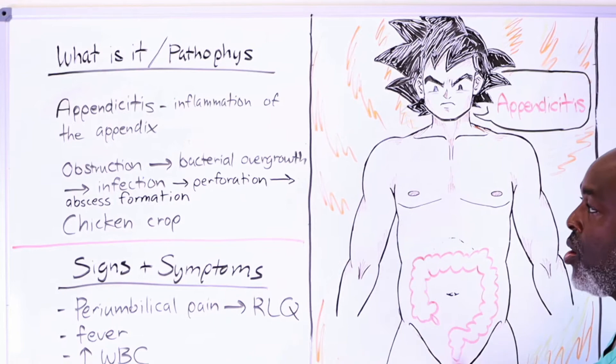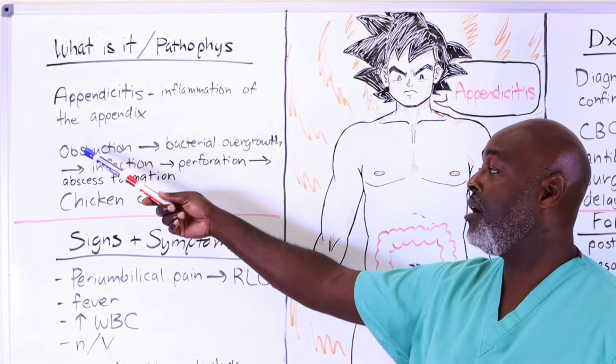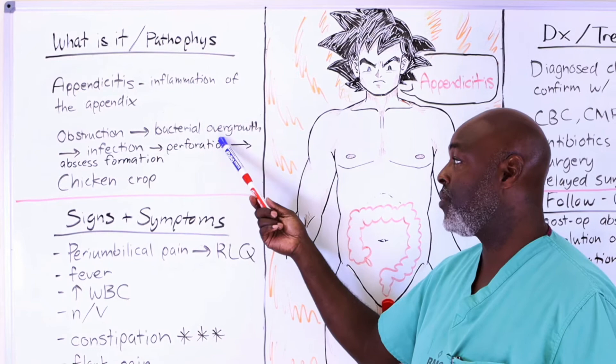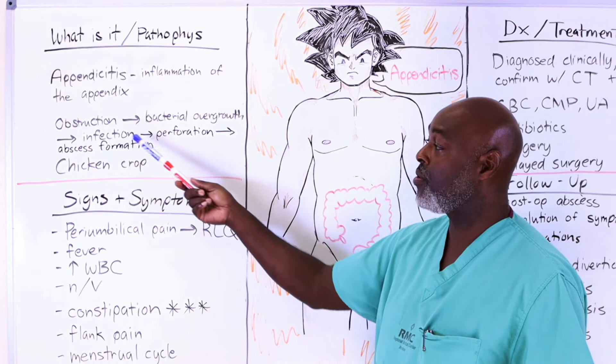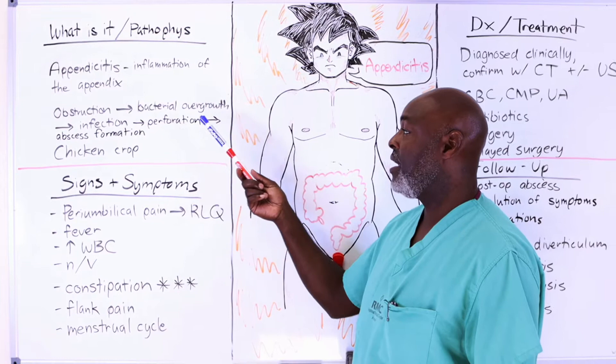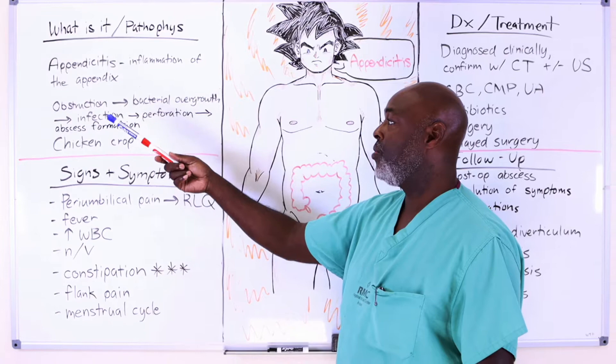When you get appendicitis, what happens is, for whatever reason, you get an obstruction of the lymphatics of the appendix that then turns into bacterial overgrowth, which then turns into infection. If it's not caught at that stage, you can get what's called perforated appendicitis, and if that's not caught early enough, it then turns into abscess formation.